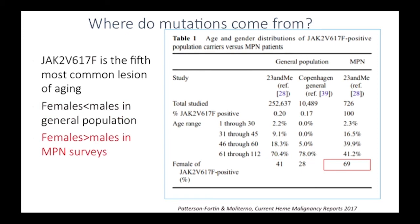When 23andMe also specifically recruited MPN patients — 726 diagnosed MPN patients — they found that 69% of the disease-associated JAK2-positive cases were females. So there's a disconnect: women are more at risk for actually getting full-blown disease and are more prevalent among MPN patients, whereas males have a higher mutation rate with aging in the general population. There are a lot of biologic factors that determine why we get this, how we get it, and how it manifests.